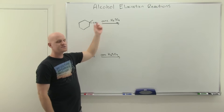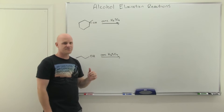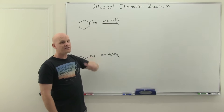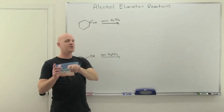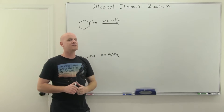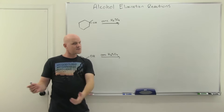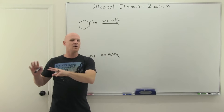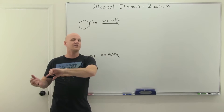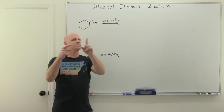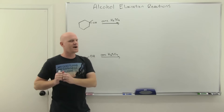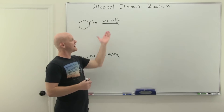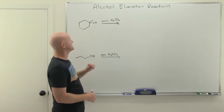The reagent of choice is concentrated H2SO4. We learned earlier that with an alkene, you could use dilute H2SO4 to form an alcohol. Now we're starting with the alcohol, and with concentrated H2SO4 we can form the alkene — the reverse reaction. The difference really does come down to how concentrated your sulfuric acid is.